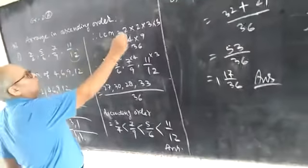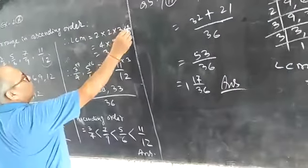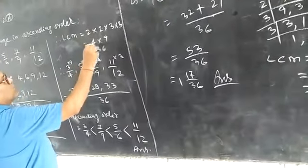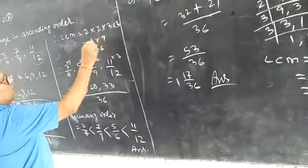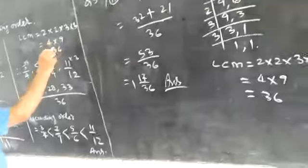Therefore, LCM is equal to 2 into 2 into 3 into 3. 2 times 2 is 4, 3 times 3 is 9, 4 multiplied by 9, that is 36.